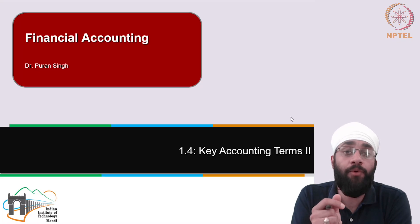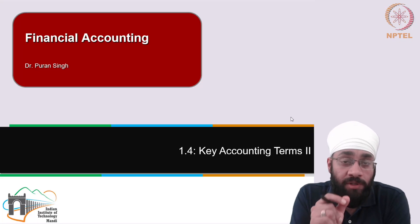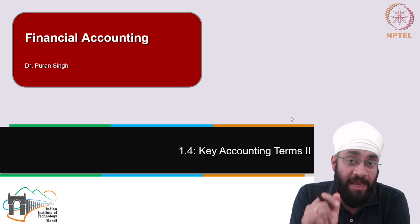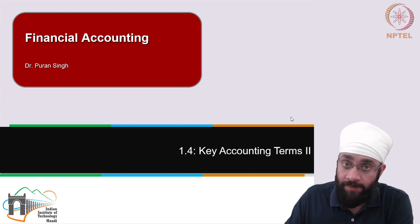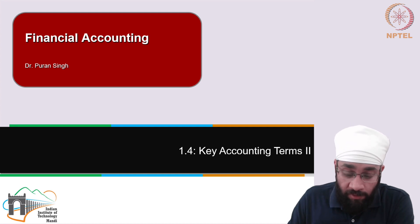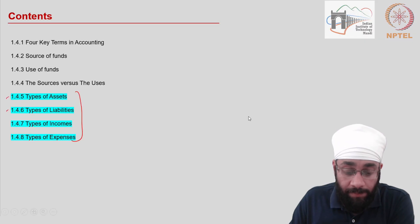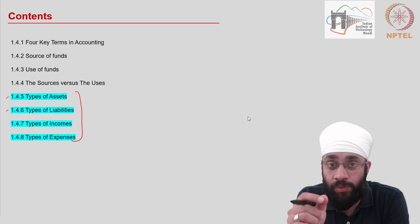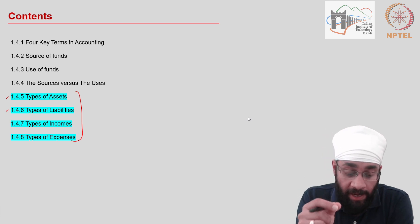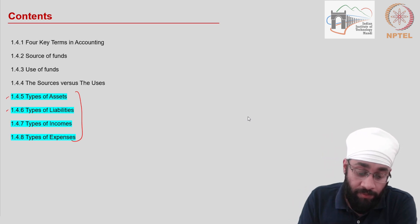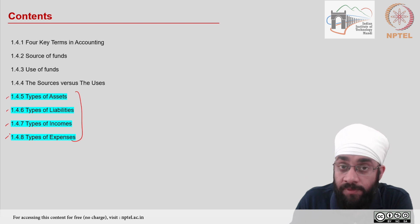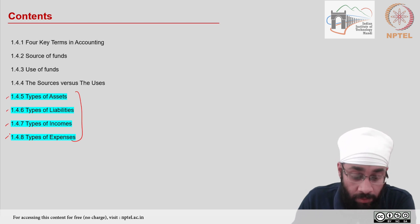In this video, I am going to talk about types of assets, liabilities, incomes, and expenses. We will build on our understanding from the previous video and now deep dive into the four types — the four key terms of accounting.